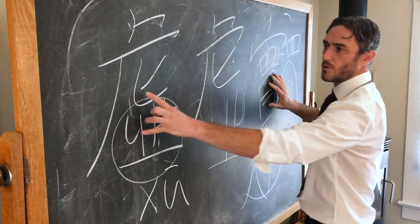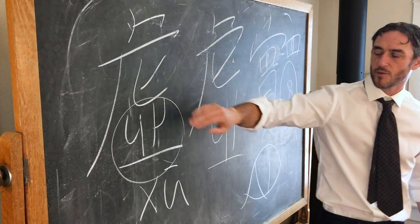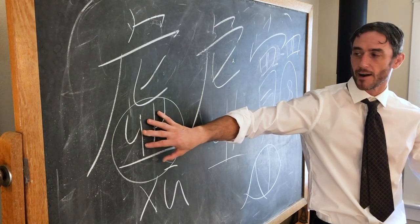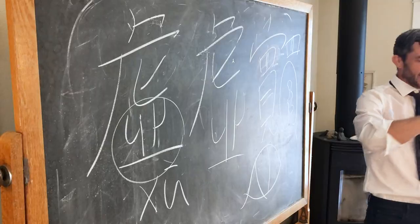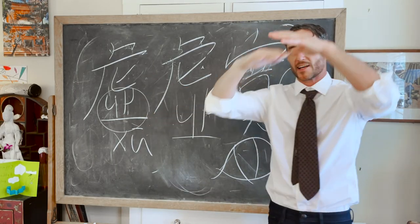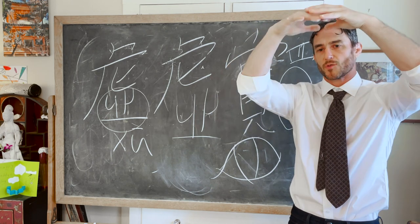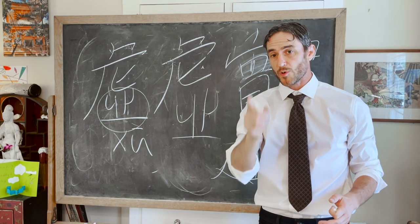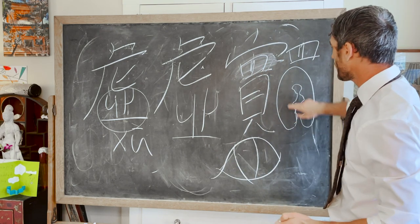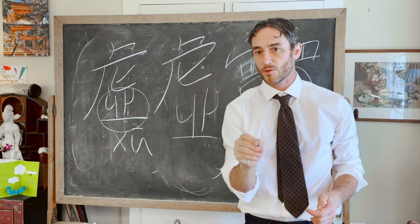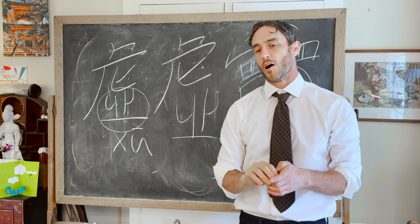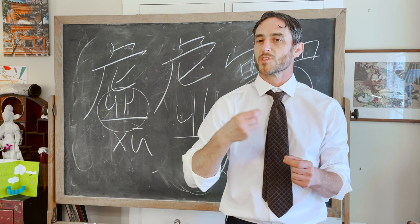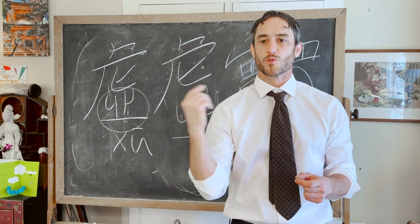When you look at these two concepts together, with xu you have a position where something could be there or could not be there. With shi, it's not just a place where someone could sit — it's actually a covered structure, something with a set roof connected to the ground. The eye conveys the notion that it's actually being perceived, actually being seen or noticed. The cowrie shell is something that can be counted, with a set value agreed upon consensually.